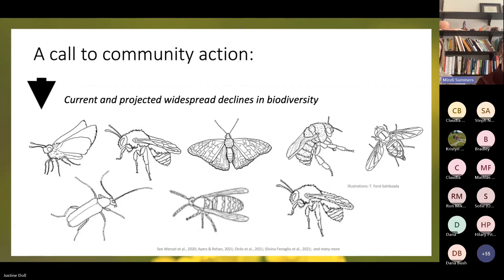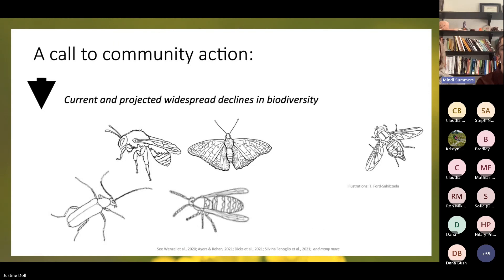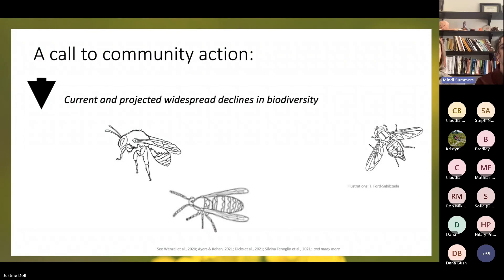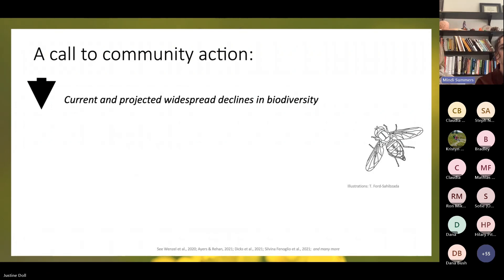Our project is in response to the broader call for community action addressing widespread declines in biodiversity, particularly pollinators. Animal pollination is required for the success of over 75% of flowering plants globally, including many of the foods that we eat. Pollinators are required for the diversity of flowers we see in our neighborhoods, as well as other animals like birds that rely on them for food. This call to action to mitigate losses in biodiversity and conserve essential ecosystem functions motivates both of us as biologists and educators, and motivated students to advocate for a community science project.